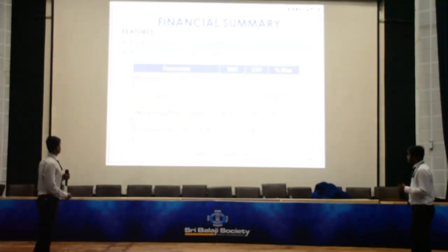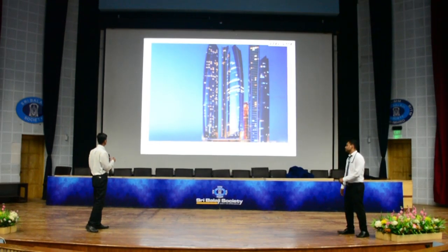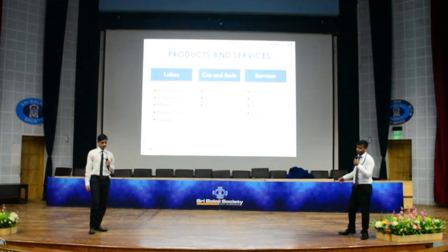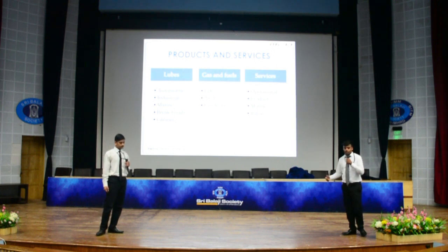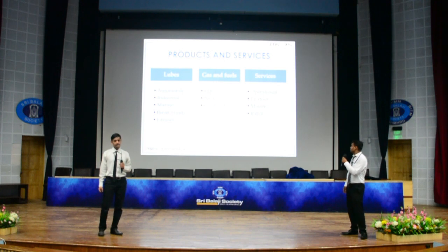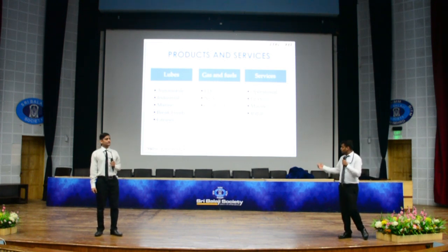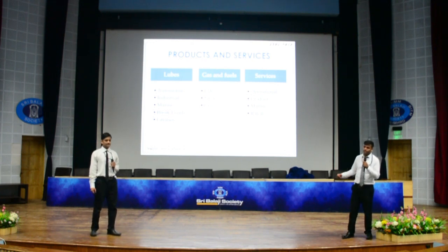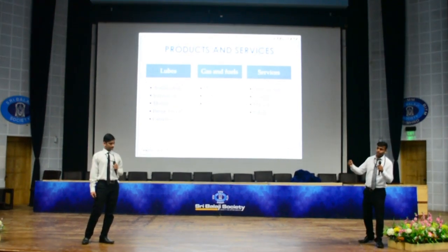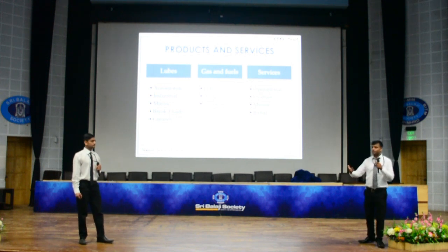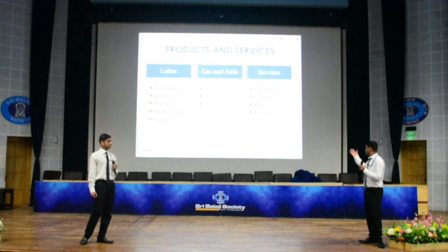ADNOC makes various products including automobile lubricants, industrial lubricants, and marine lubricants. They also produce gas products which include propane, butane, LPG, and NGV — Natural Gas Vehicle — which is an alternative fuel vehicle using compressed natural gas. They also provide various services.